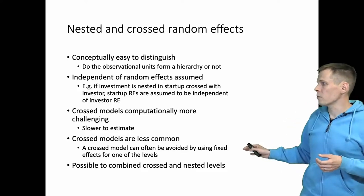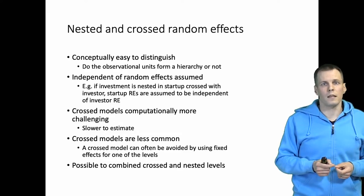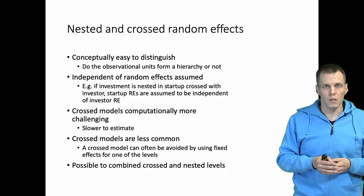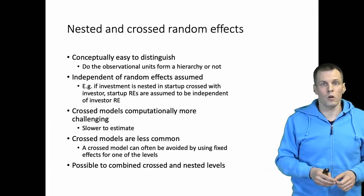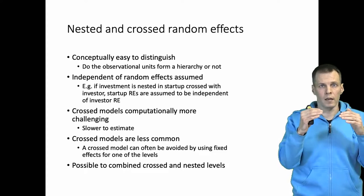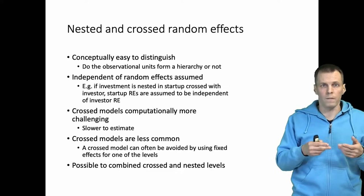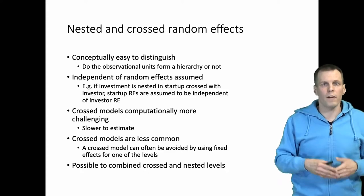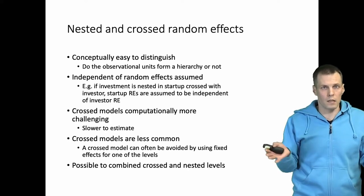It is also possible to combine crossed and nested levels. For example, venture capitalists that specialize in one industry, where each startup also belongs to one industry — you could have industries as your level three, and then venture capitalists and startups would be crossed as levels one and two, with the actual investments as the lowest level observations. These combined crossed and nested models are not very common and are estimated the same way. The only practical issue with cross random effects models is that they just take longer to estimate.